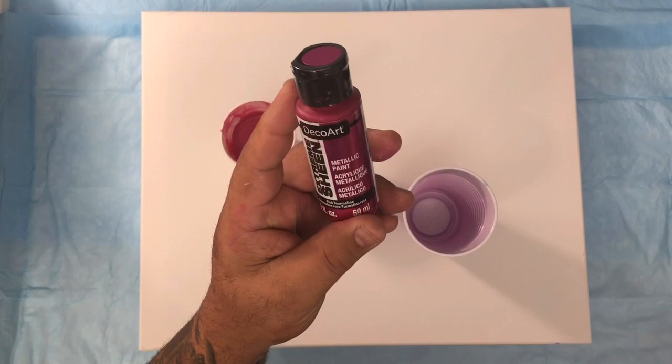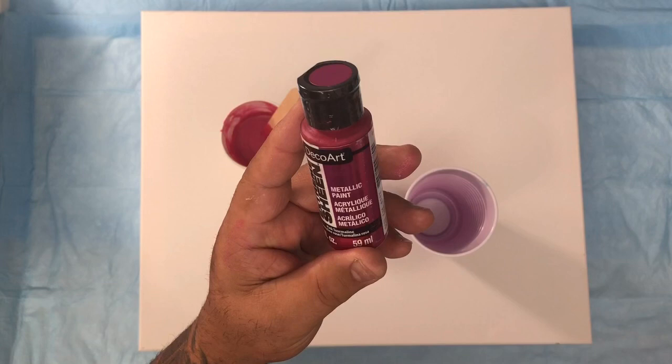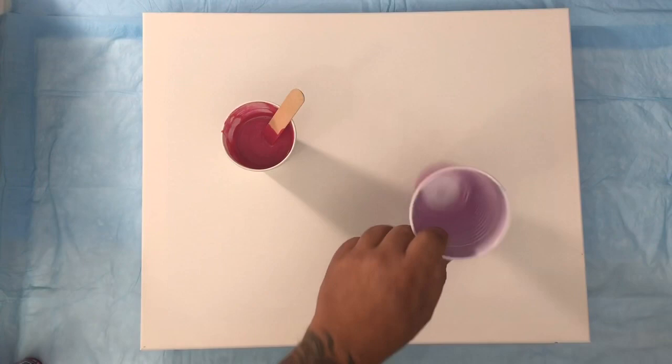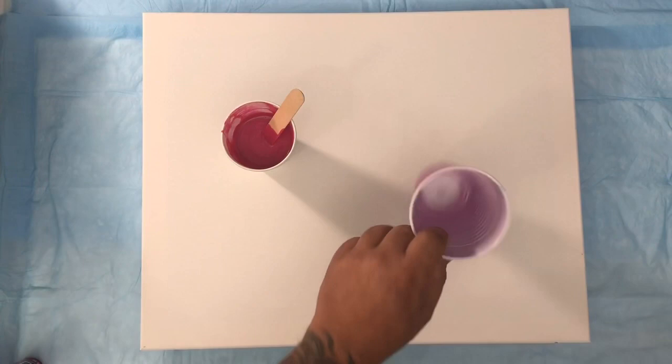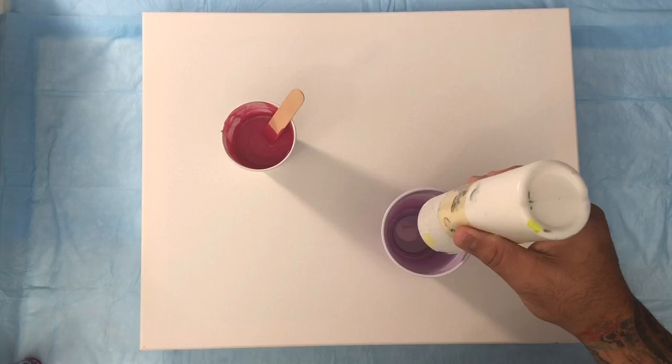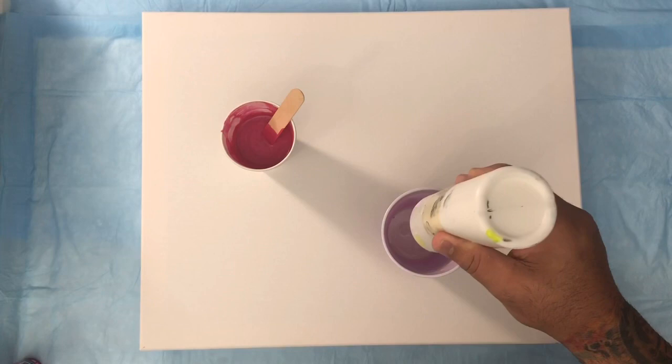This is the color pink tourmaline. We're going to be doing a pour, and I'm going to include in my recipe the milk paint. So that's the first one I'm going to lay down there.